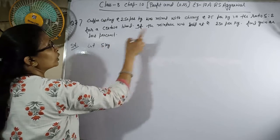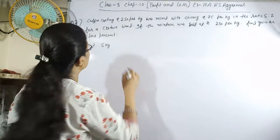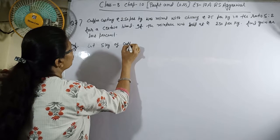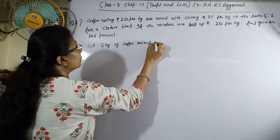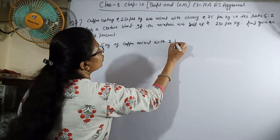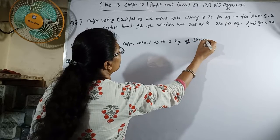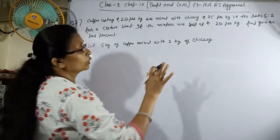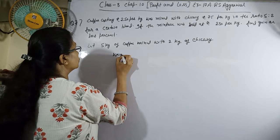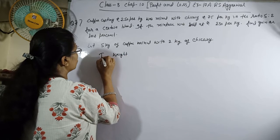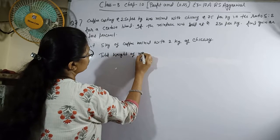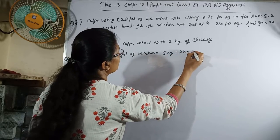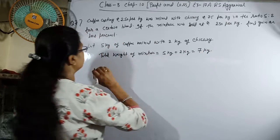Total weight of mixture equals 5 kg plus 2 kg equals 7 kg.